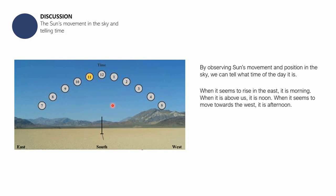When it seems to rise in the east, it is morning. When it is directly above us, you call that noon time. And then when it seems to move towards the west, we call that afternoon, so around 5 p.m. or 6 p.m., depending on what time of the year and wherever you are in the globe.